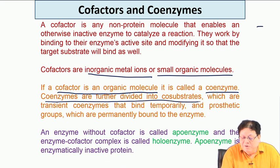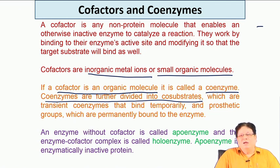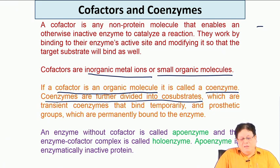Coenzymes can be divided into two categories. In one, the coenzyme is added from outside — at the time of reaction it binds temporarily to the enzyme active site, is released, and can then catalyze other molecules of the same enzyme, increasing the turnover number. In other enzymatic reactions this coenzyme is permanently bound to the enzyme.